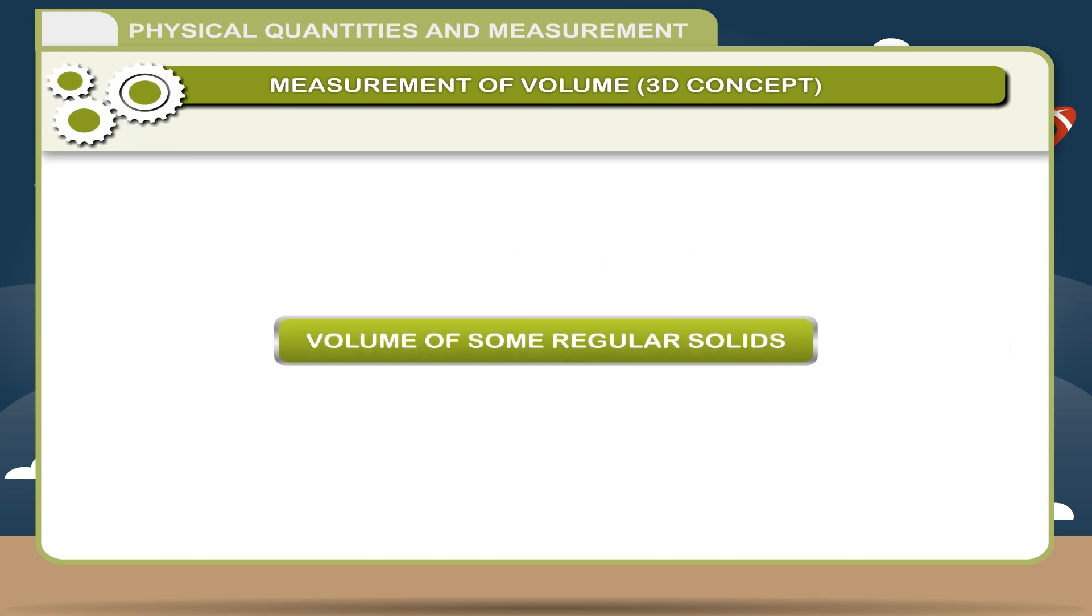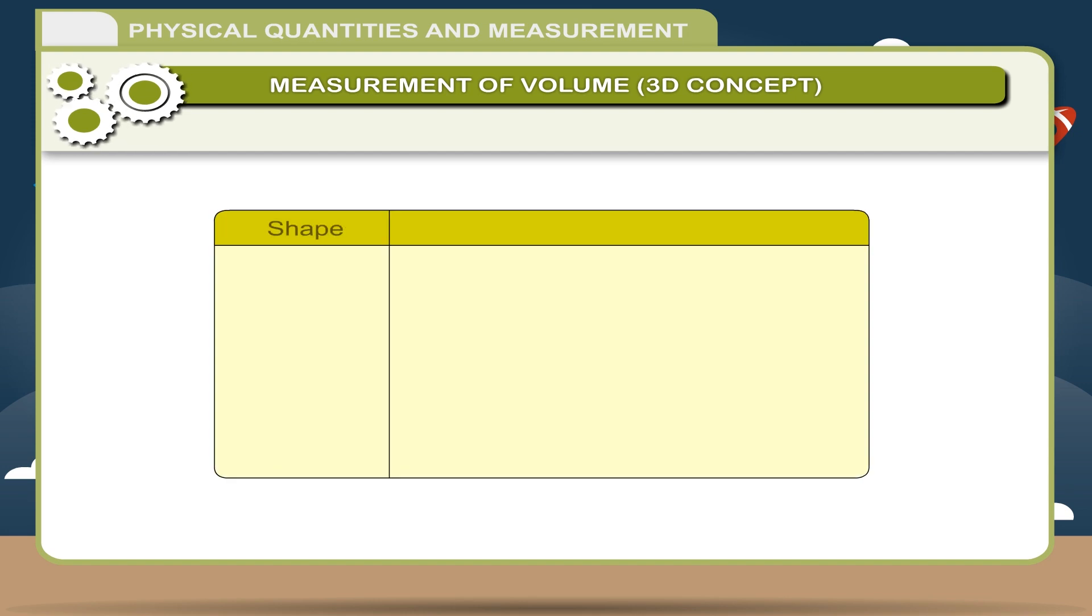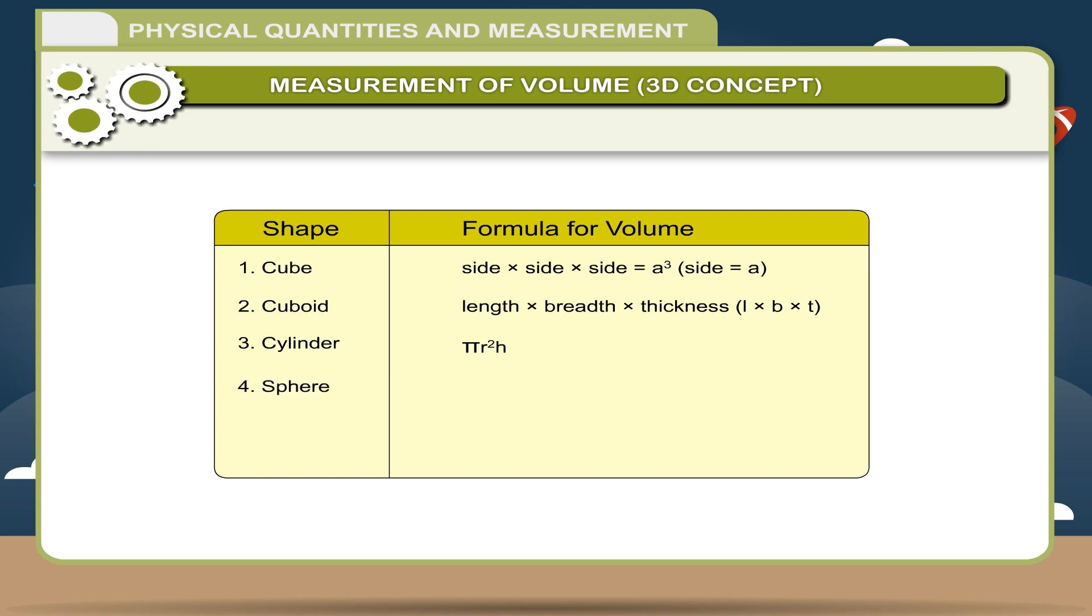Volume of some regular solids. Shape Formula for volume: 1. Cube: Side into side into side is equal to A cube where side is equal to A. 2. Cuboid: Length into breadth into thickness L into B into T. 3. Cylinder: Pi R square H. 4. Sphere: 4 by 3 pi R cube. 5. Cone: 1 by 3 pi R square H.